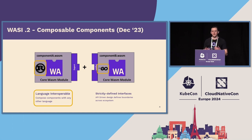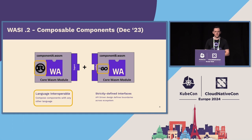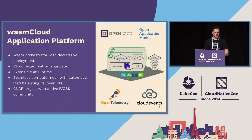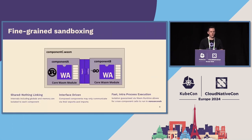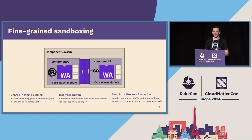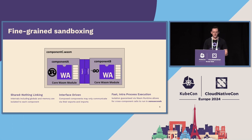These components — you can not only build applications with them, you can compose them together, which is a core piece of how, if you have multiple different microservices in your application, they talk to each other over this component boundary. The really important part of this is that in the WebAssembly specification, the standard includes a very strong security boundary driven by these common interfaces. These different components actually don't share anything when they run.